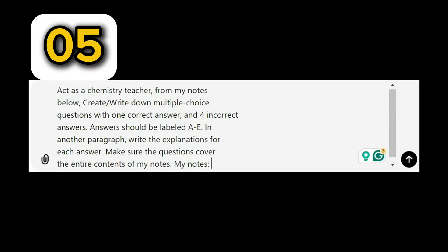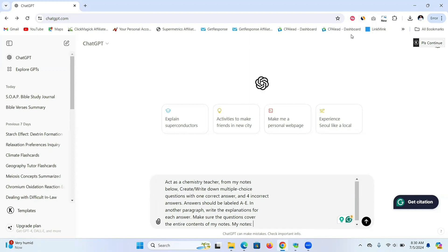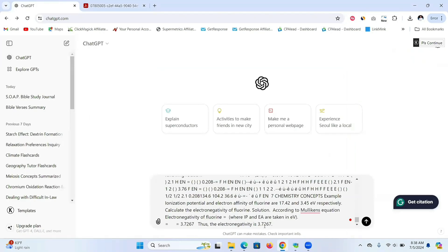Prompt number five is to create multiple choice questions from your notes. If you have already revised and want to test yourself, copy this prompt, paste it, then copy the notes you've already read and paste them in. ChatGPT is going to create multiple choice questions from your notes so you can test yourself on whether you understood what you just read.